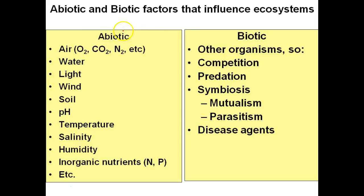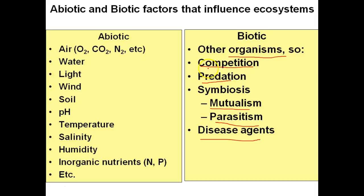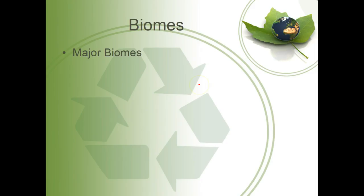Abiotic factors are all nonliving things: soil, light, water, air, carbon dioxide, wind, pH, salinity, humidity, and inorganic nutrients. When you look at the biotic side, organisms are the main biotic factor, but there are other symbiotic relationships like competition, predation, mutualism, parasitism, bacteria, and viruses. Why are these all biotic factors? Because they all have to do directly with living organisms — an organism preys on another organism, an organism competes with another organism, a parasite preys on a host. These interactions are between two living things, so they are considered biotic.